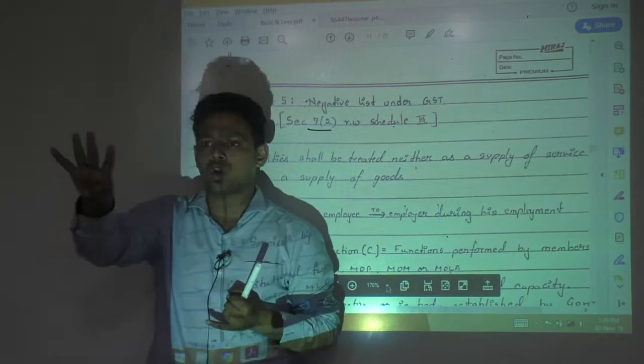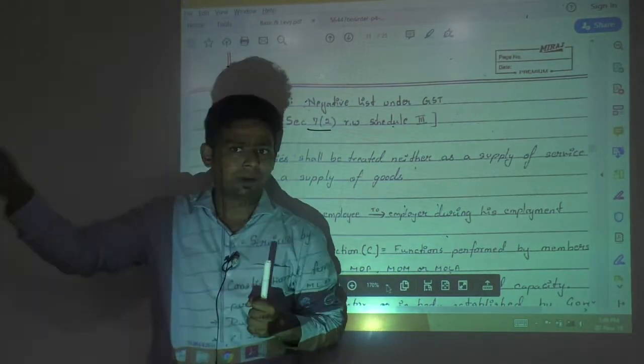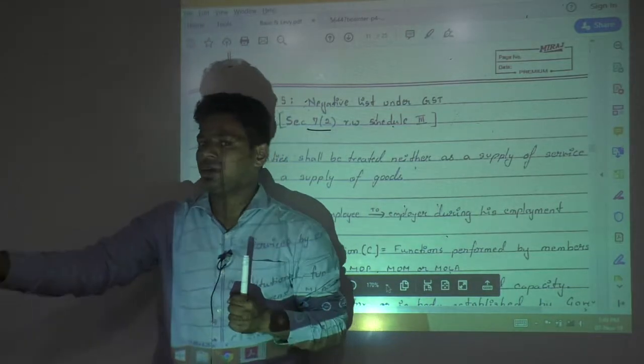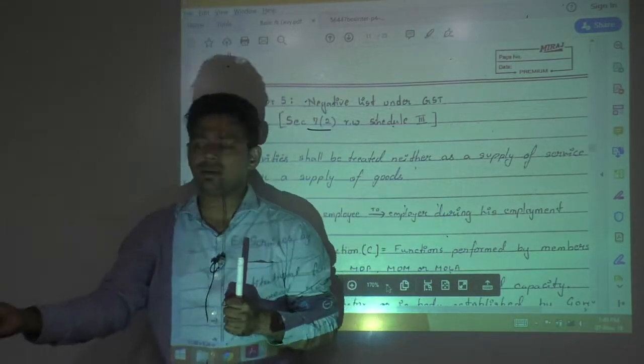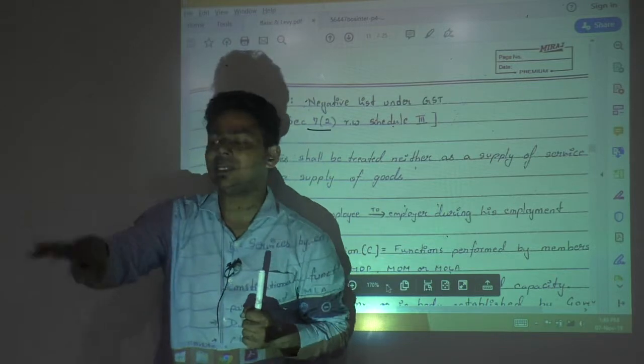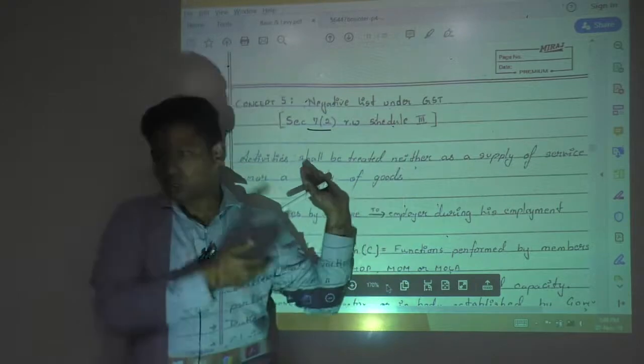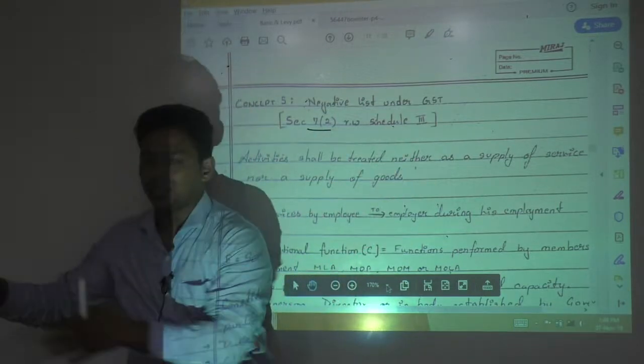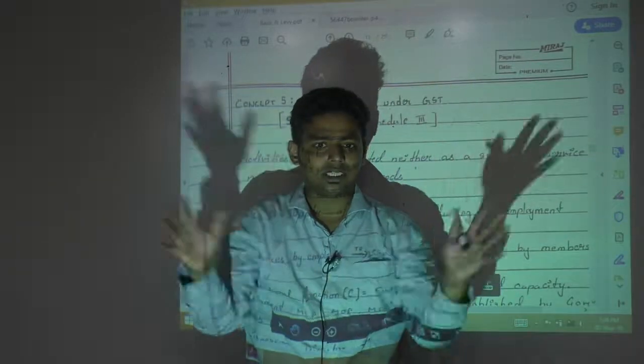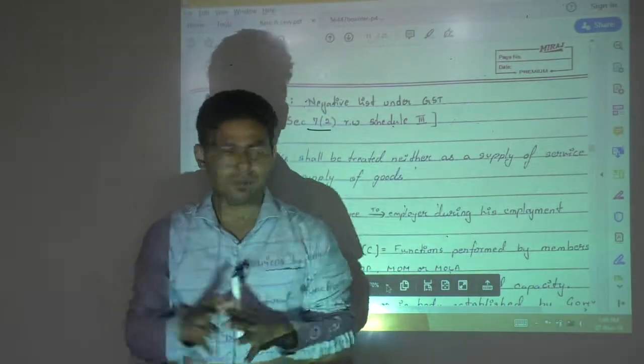Schedule 1 was having 4 clauses: permanent transfer of business asset, agent to principal, principal to agent, related party transactions, and last was import of service from related person. Schedule 2 just now we finished - supply of goods and supply of services. So some activity we have classified them.